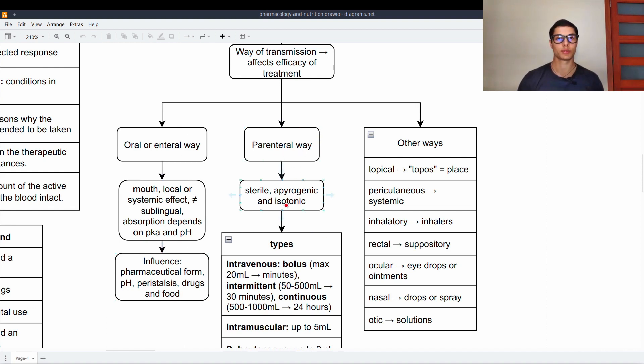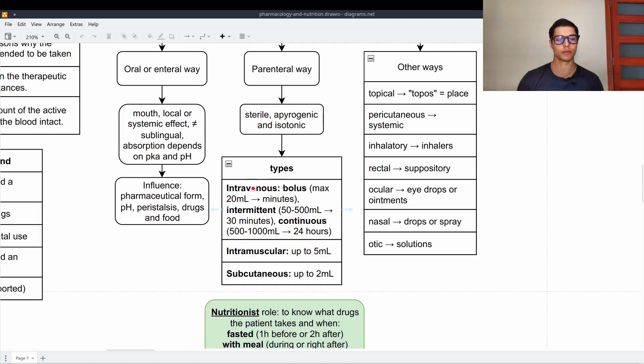Then we have the parenteral way which must be sterile, apyrogenic and isotonic. Types we have the intravenous, the intramuscular and subcutaneous. In the intravenous we have the bolus which is maximum 20 milliliters and it lasts for 4 minutes. Intermittent 50 to 500 milliliters 30 minutes. Continuous 500 to 1000 milliliters 24 hours. Intramuscular up to 5 milliliters goes to the muscle and subcutaneous under the skin up to 2 milliliters.